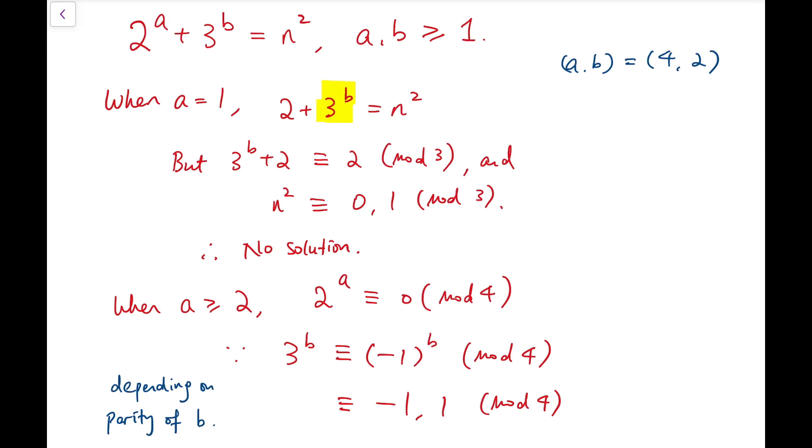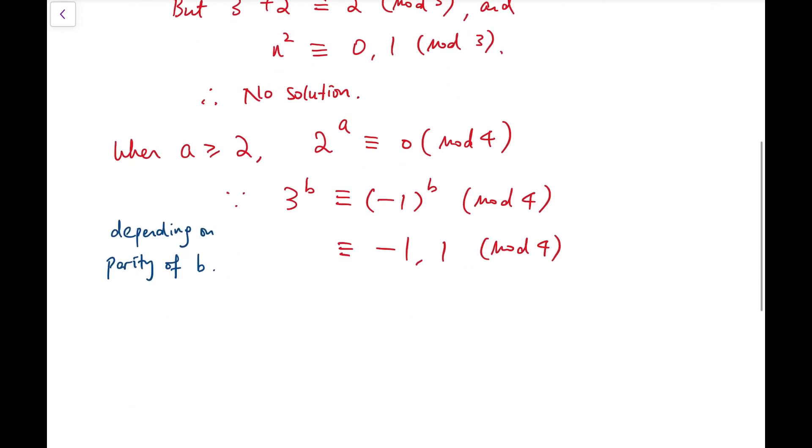Say when b is odd, then it's minus 1 mod 4, and if b is even, then it's 1 mod 4. When we add them up, it's either minus 1 or 1 mod 4.